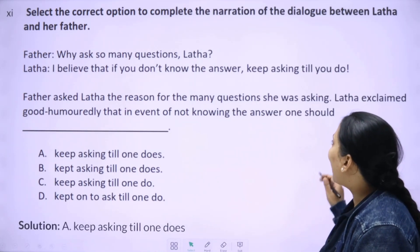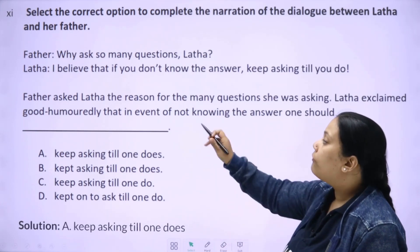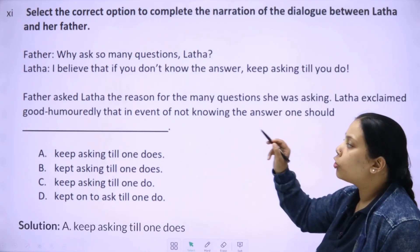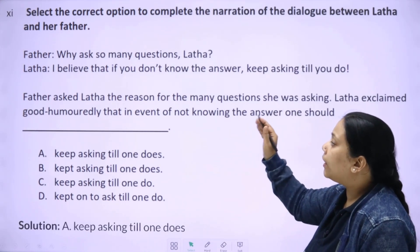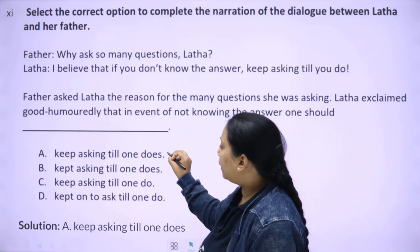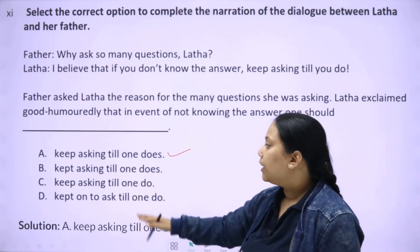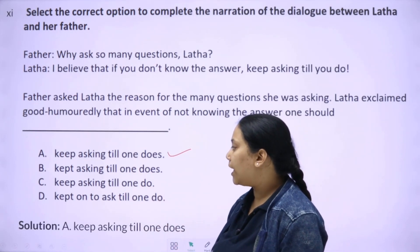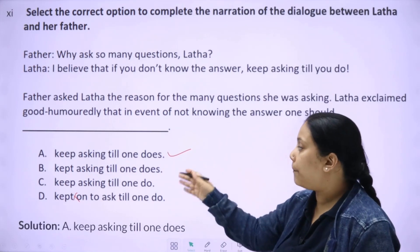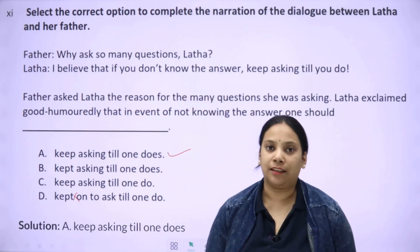Next: 'Father: Why do I ask you so many questions, Latha? I believe that if you don't know the answer, keep asking till you do.' In indirect speech, you have to complete it. Father explained the reason for his many questions good-humoredly that in the event of not knowing the answer, one should keep asking till one does. 'Kept asking' is wrong, 'keep asking till one do' is wrong — 'keep asking till one does' is the first correct option, as everything is in present tense.